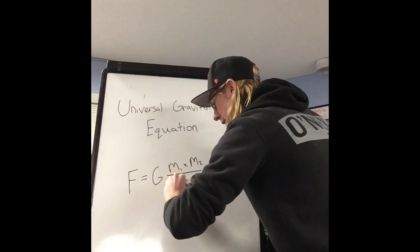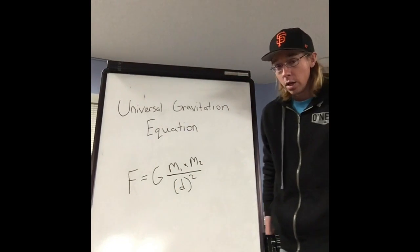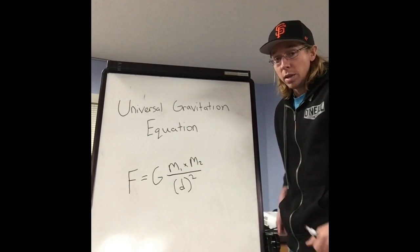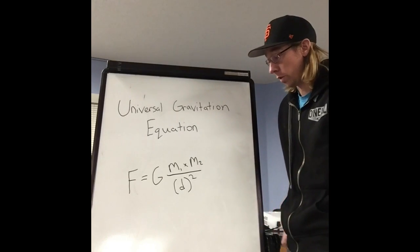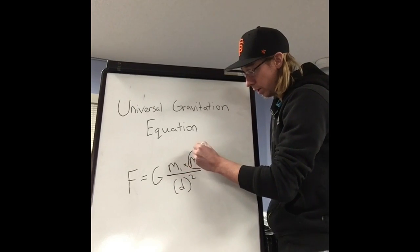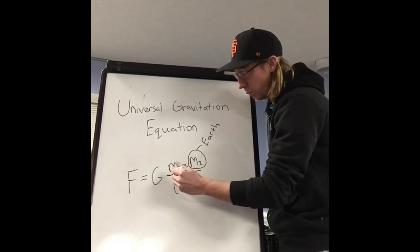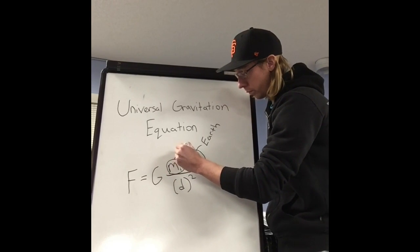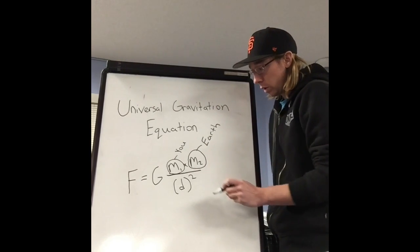It's the constant G times m1 times m2 divided by distance squared. Okay, so this m1 and this m2 here can be the mass of any two objects that have a gravitational pull upon each other. For example, we could say that m2 is the mass of Earth and m1 could be the mass of you on Earth.